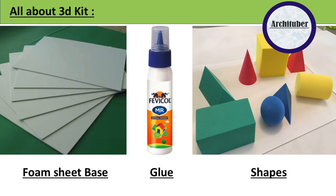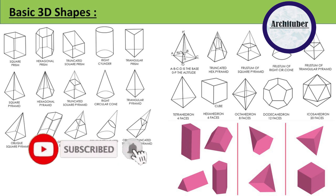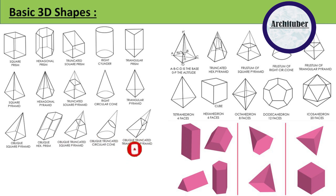These are the kit that you are going to get. Now let's discuss about the basic 3D shapes. Basically you are going to get basic 3D shapes like square prism, triangular prism, cylinder, square pyramid, circular cone, cube, etc. You can also get frames and lines. So you have to make a composition out of it.